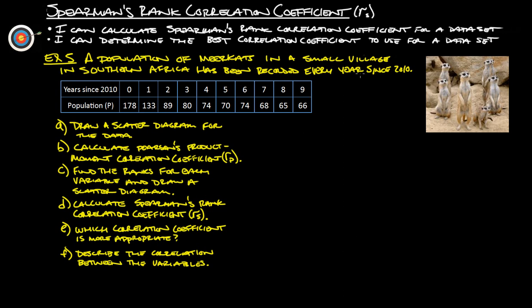Example 5, population of meerkats in a small village in southern Africa has been recorded every year since 2010. So we're going to do, here's all of our data, and then we're going to do all these different things here. Draw a scatter diagram, calculate the Pearson's product moment correlation coefficient, so forth and so on. So let's just kind of do each piece here at a time.